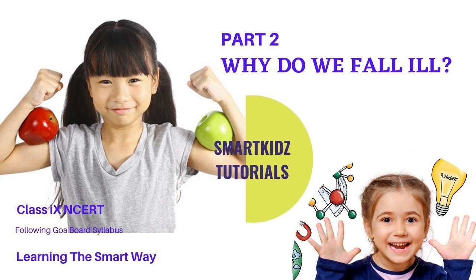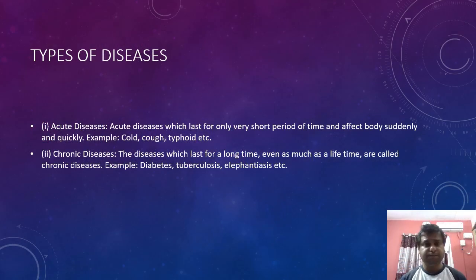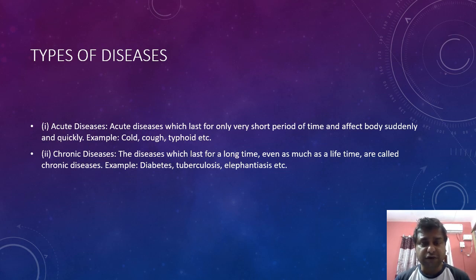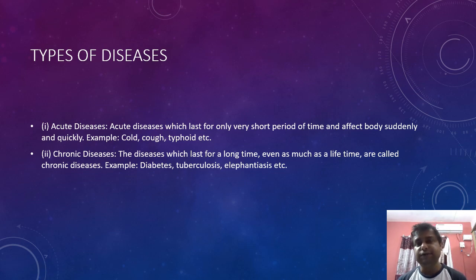We learned about the causes of disease and how it is caused. Now we will learn about the types of diseases, which we briefly discussed as being acute diseases and chronic diseases. Acute disease is a type of disease which lasts only for a short period of time and affects the body suddenly and quickly. Examples are cough, cold, and typhoid — it comes quickly and goes quickly as well.